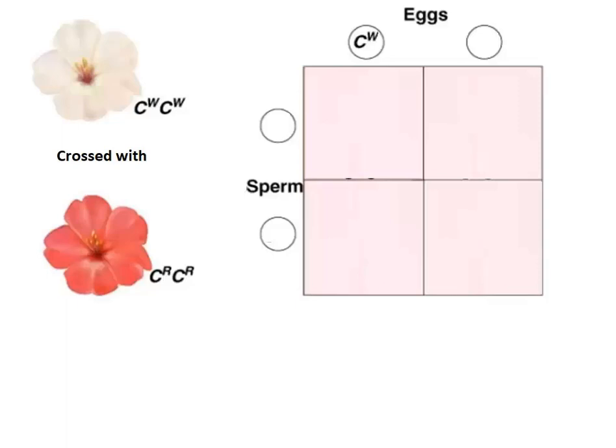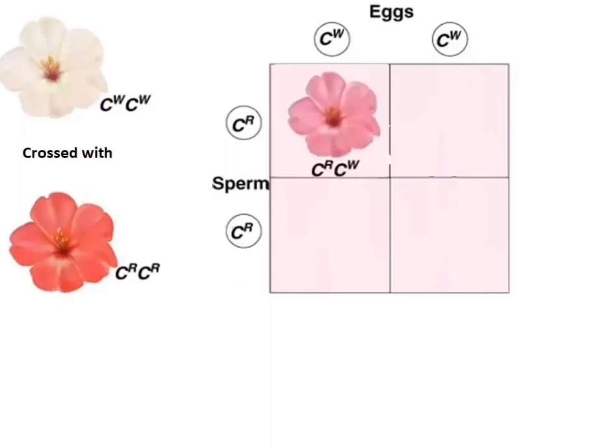We'll put the white flower's gametes up on the top and the red flower's gametes on the side. Once we combine these gametes, we're going to get two pink flowers: CR CW and CR CW.